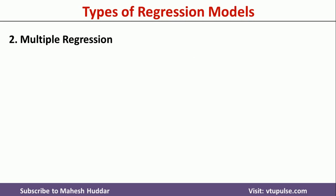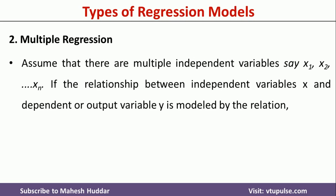Coming to the second one, that is the multiple regression model. In this case, there are multiple independent variables — let us say x1, x2, till xn — and we want to find the relationship between these independent variables and the output variable. It is represented by the equation y = a0 + a1*x1 + a2*x2 + ... + an*xn. This kind of relationship is called a multiple regression model, where we have multiple independent variables and only one dependent variable.